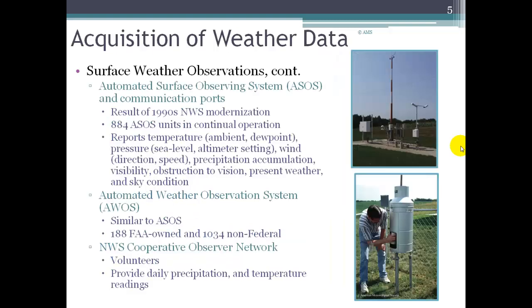The surface weather observations coming from the National Weather Service come from the Automated Surface Observation System, or ASOS, as we've talked about throughout the course. It used to be that these stations required human interaction to read things like the high temperature of the day, the low temperature, how much precipitation was in the bucket, and so on, but in the 90s this was all modernized and made automated. So these stations work continuously and they report temperature, pressure, wind, precipitation, visibility, obstruction to vision, and current weather and sky conditions, all through automated observations.